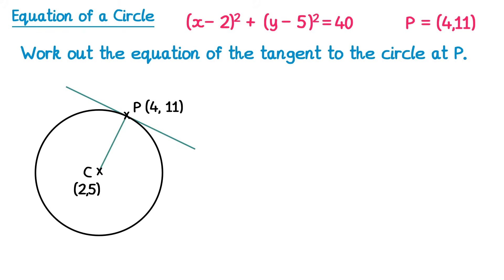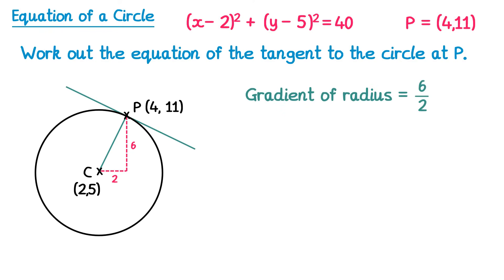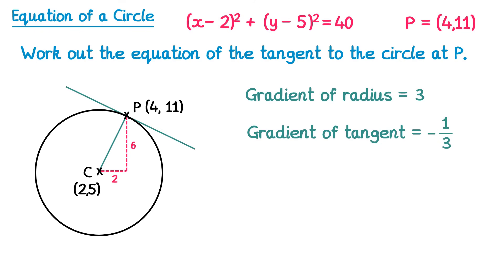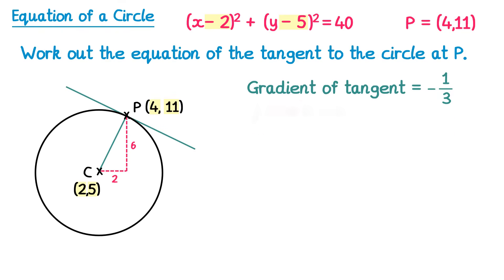To find the gradient we'll first work out the gradient of the radius, drawing a right angle triangle. The horizontal distance from 2 to 4 is 2, and the vertical distance from 5 to 11 is 6. So the gradient of this radius is 6 over 2, which equals 3. Since the radius meets the tangent at a right angle, the gradient of the tangent will be the negative reciprocal of this — so negative one third.